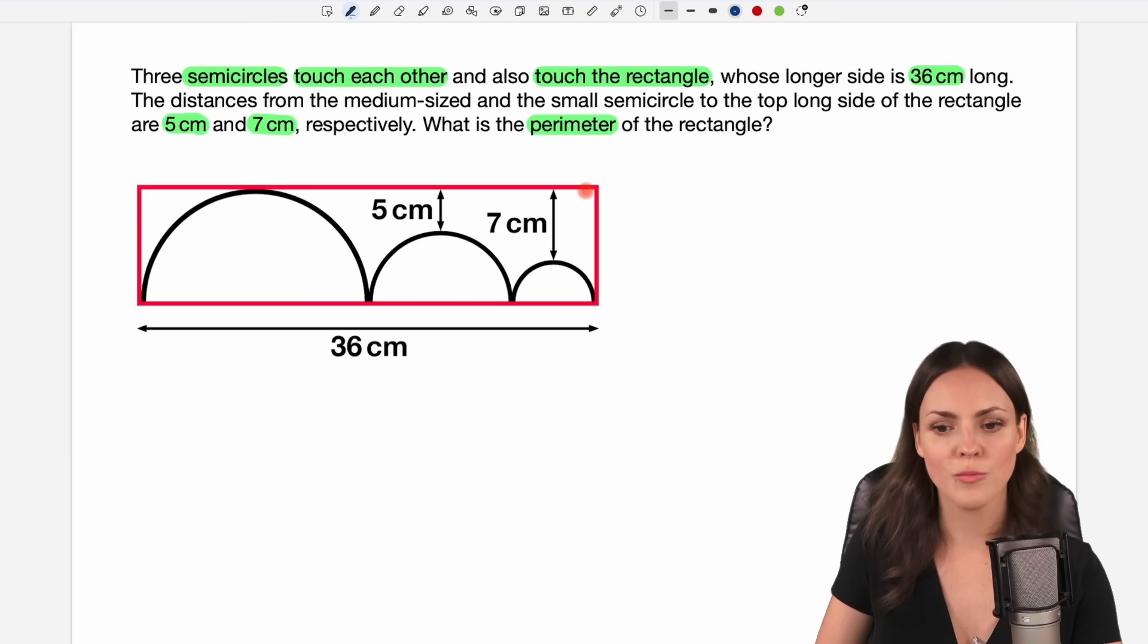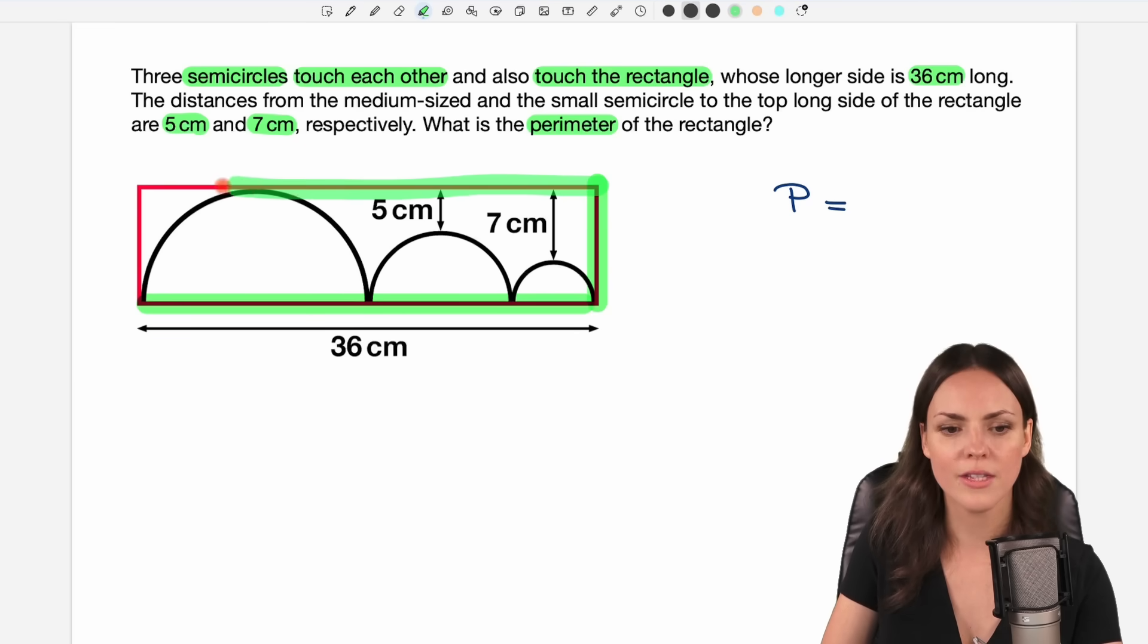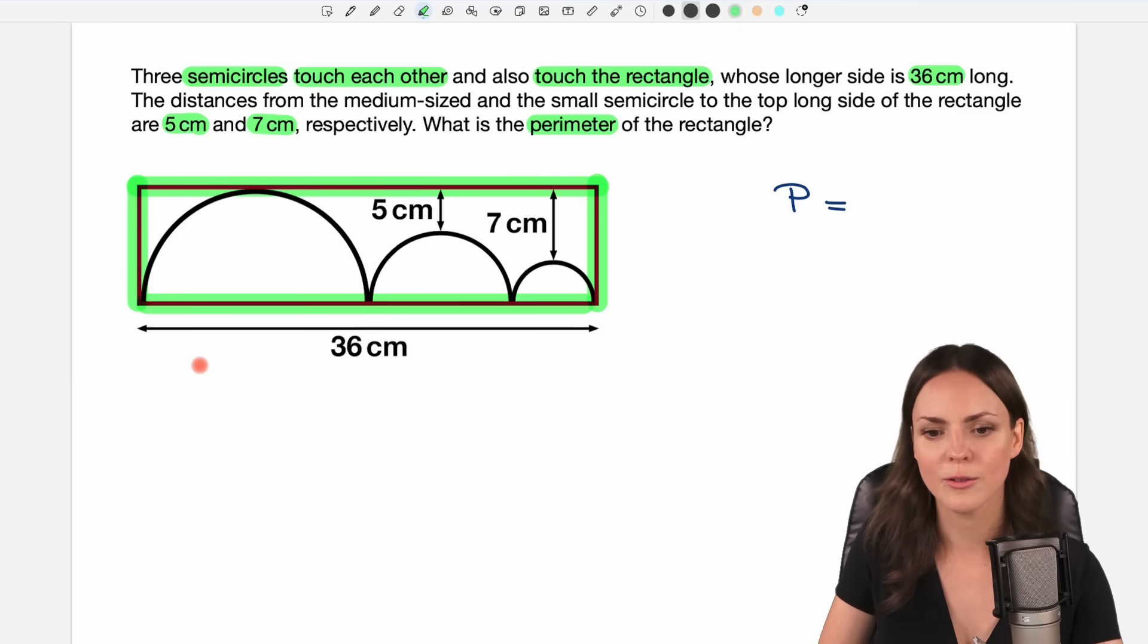Okay this is the question, so we want to find the perimeter of this red rectangle and I call the perimeter P and we can find it by adding the four lengths of the sides of our rectangle. And we already know the length of this side here and the length of this side because it is given by 36 centimeters. So we have 36 plus 36 which equals 72.